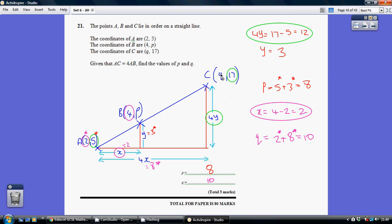So Q is 8 further along than A with a coordinate of 2, 5. So looking at the X coordinate, Q must be 10 because we've got 2 plus a length of 8, which is 10. So we've got P equaling 8 and Q equaling 10.